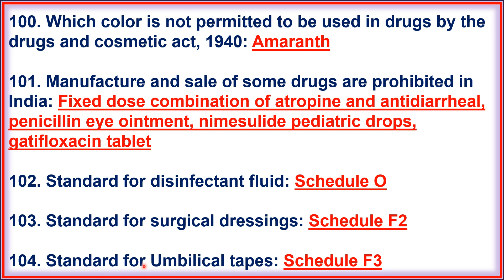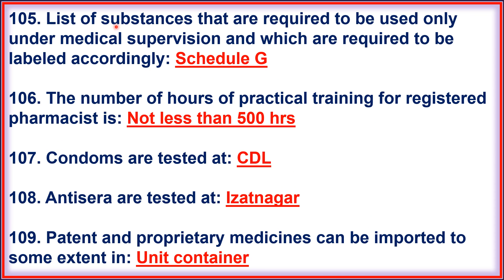102. Standard for Disinfectant Fluid comes under Schedule O. 103. Standard for Surgical Dressing comes under Schedule F2. 104. Standard for Umbilical Tape comes under Schedule F3. 105. List of substances required to be used only under Medical Supervision and which are required to be labelled accordingly comes under Schedule G. 106. The number of hours of Practical Training for Registered Pharmacists is not less than 500 hours. 107. Condoms are tested at CDL — Central Drug Laboratory. 108. Antisera are tested at Ijartanagar.